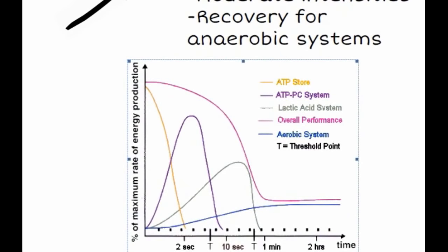This information is depicted in the graph just here below. Here you'll see that the ATP stores are used first by the ATP phosphocreatine or alactic acid system. You see that it drops off quickly, and the ATP phosphocreatine system kicks in as the phosphocreatine starts to replenish those ATP stores, but again this only lasts to around the 10-second mark.